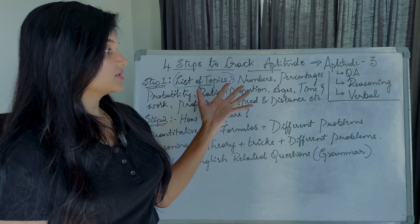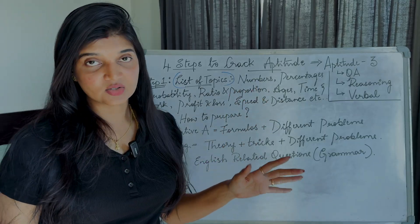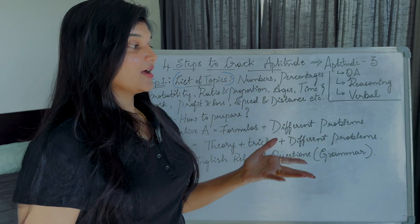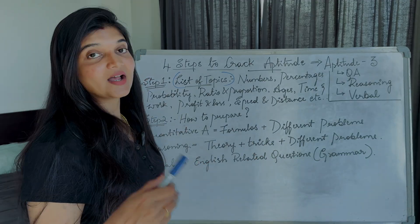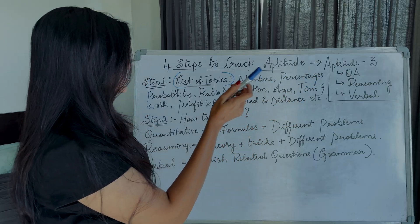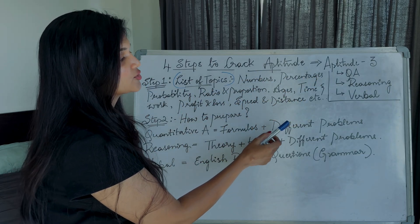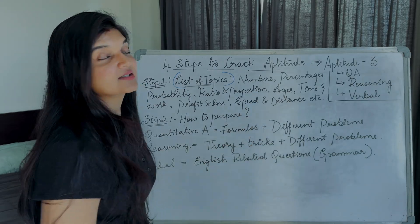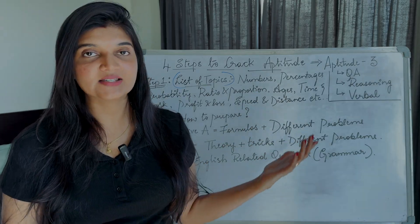So just start from the easiest topic. Numbers are the easiest topic I can say. Then I have not written in the order, but these are the list of topics which I worked on more. So there are numbers, percentages, probability, ratio and proportions, ages, time and work, profit and loss, speed and distance, etc. You have more than these topics as well.